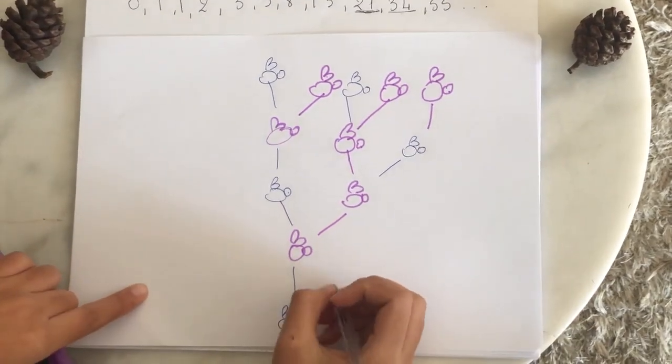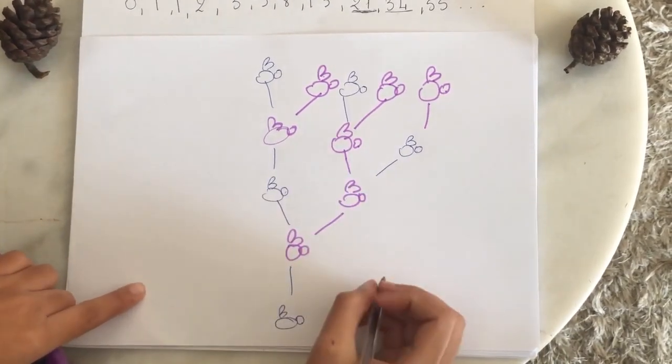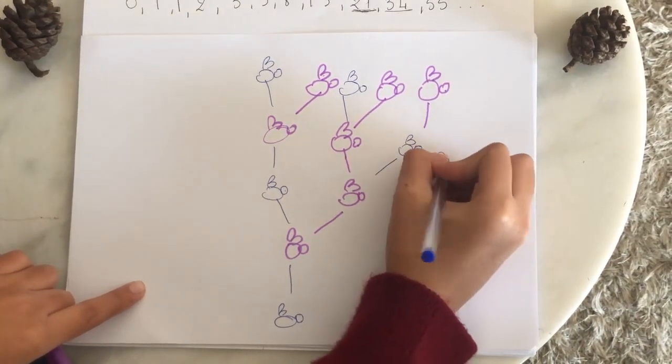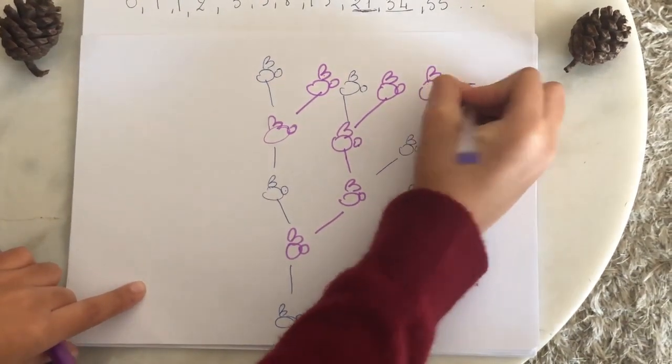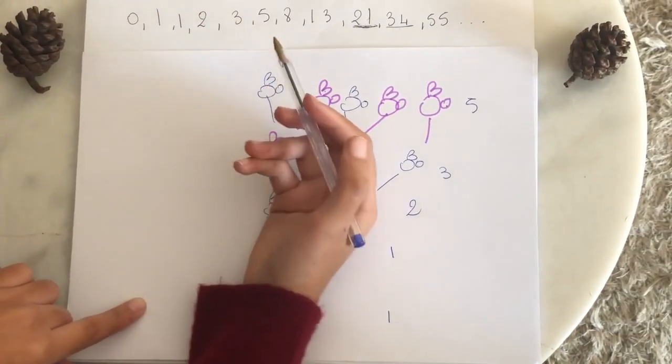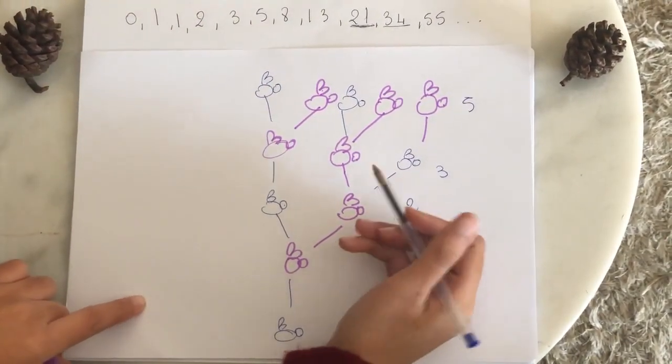Can you tell where this is going? If we add up the bees in each generation, we get 1, 1, 2, 3, 5, which is the beginning of our list of Fibonacci numbers. And if you continue drawing the parents, the list will continue.